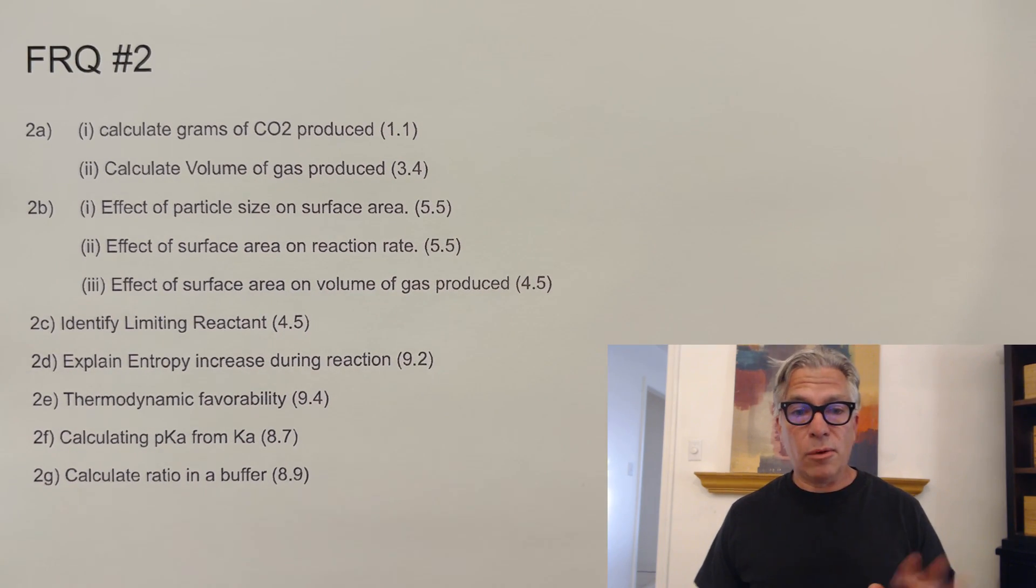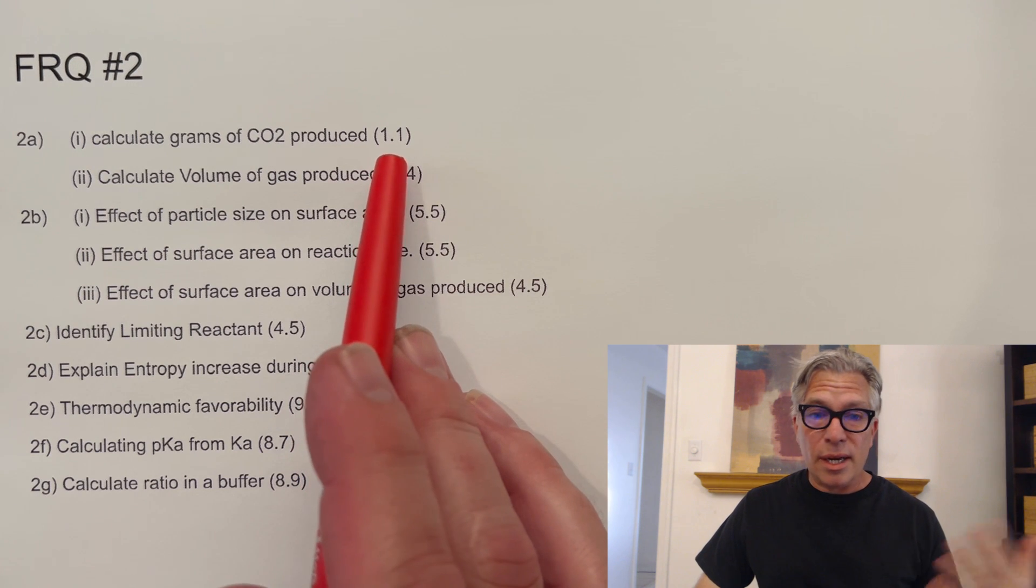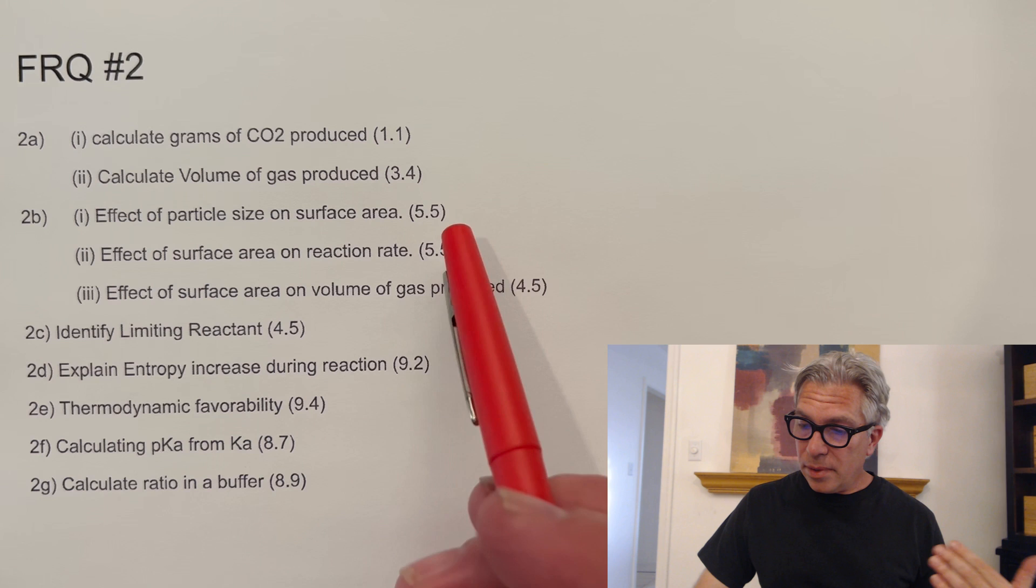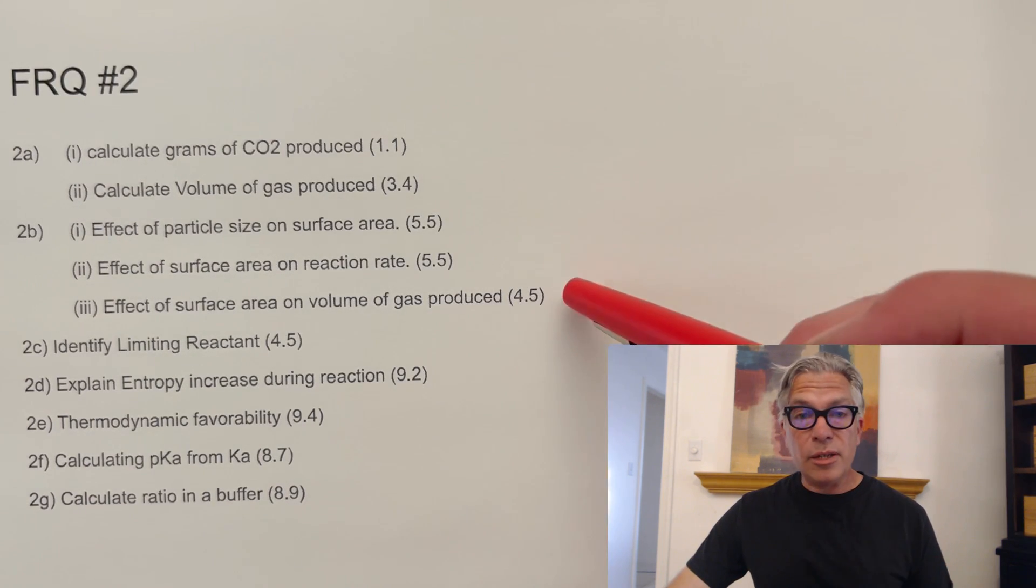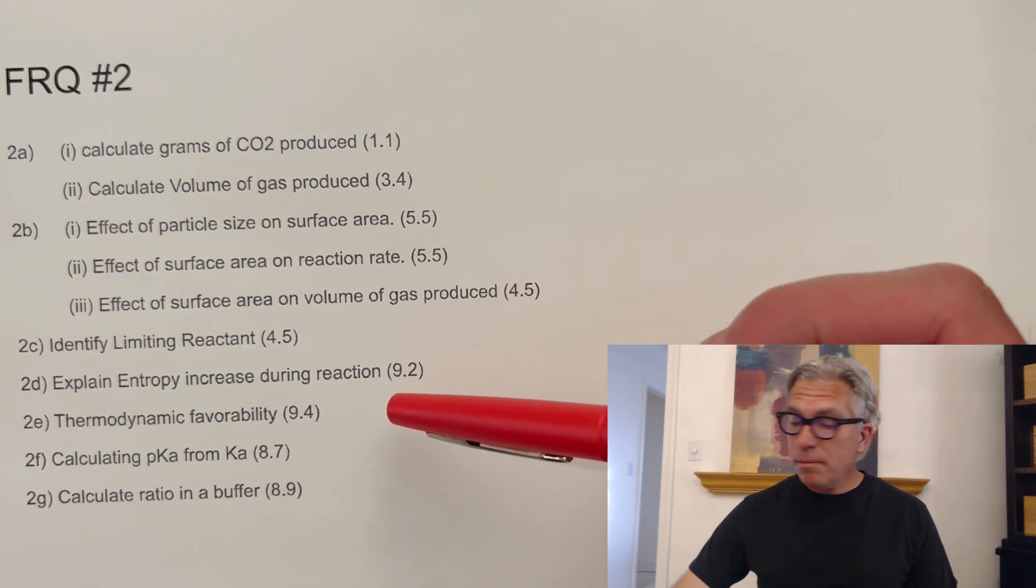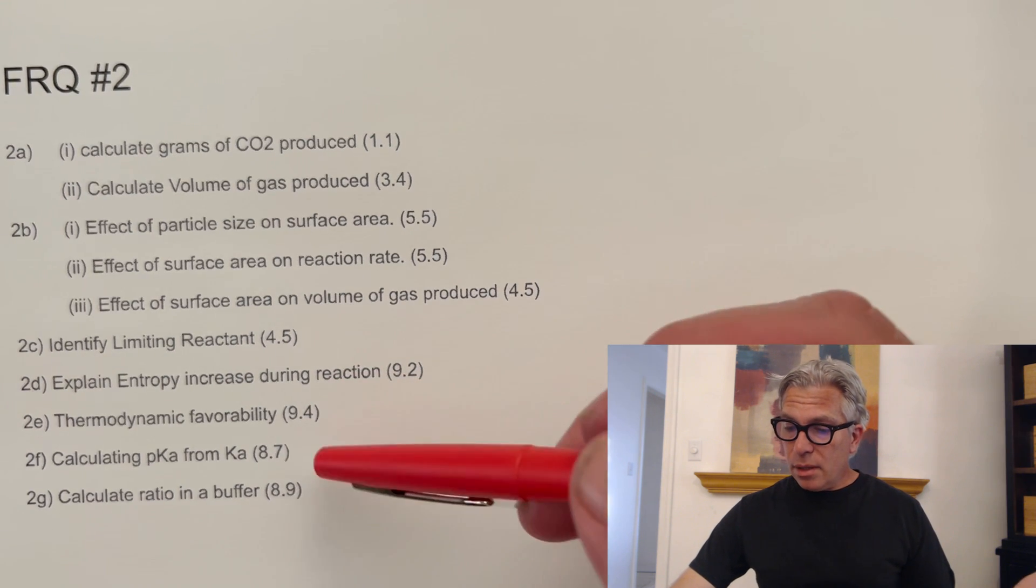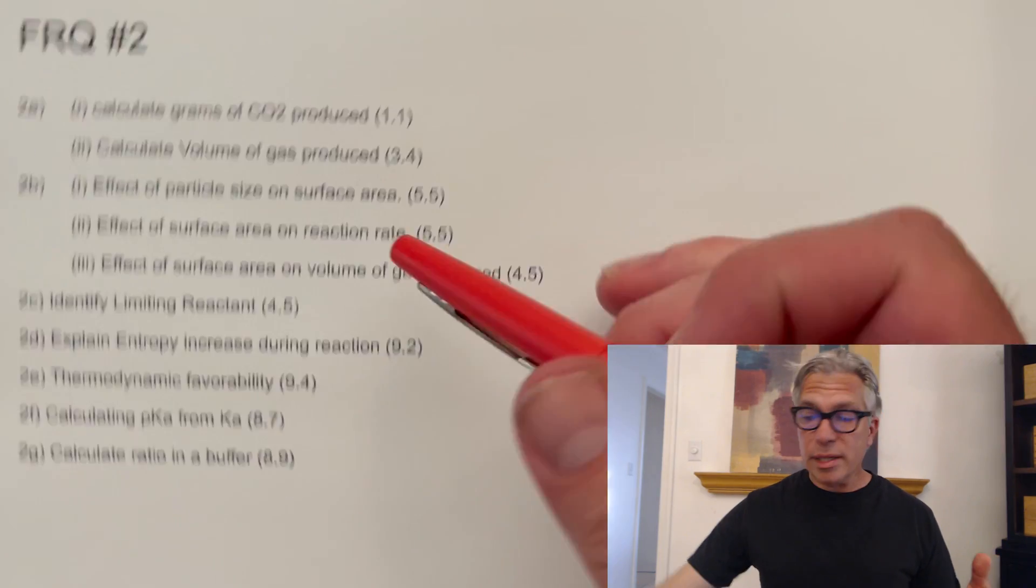I'm just going to run through these really quickly because I don't have the actual questions reproduced for the public here. So in FRQ number two, the long FRQs, we're calculating grams of CO2 produced. That's moles and grams. That's unit 1.1 right at the beginning. Calculating the volume, that's unit 3. Effect of particle size on surface area, the effect of surface area on reaction rate, and the effect of surface area on the volume of gas produced. So a couple of unit 5s and a unit 4 that happened to be there. We had to identify the limiting reactant, and that was unit 4. And then they threw in an entropy question. No problem. We studied entropy, and that's unit 9. Thermodynamic favorability. Is this reaction going to go? And if so, what can we say about it? Then we calculated the pKa from Ka, and we calculated the ratio in a buffer again. So then we're back to unit 8. So a nice little smattering of questions. Nothing surprising there. Just, you know, it's exciting to see which order they get put in.